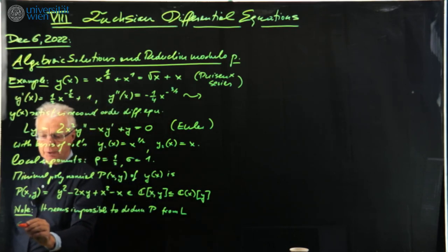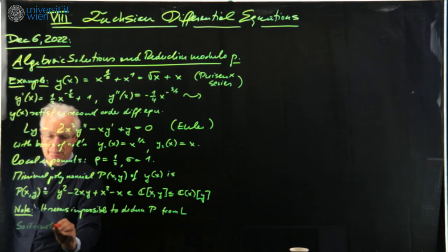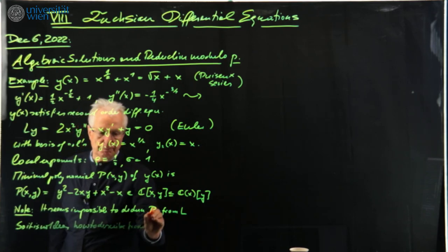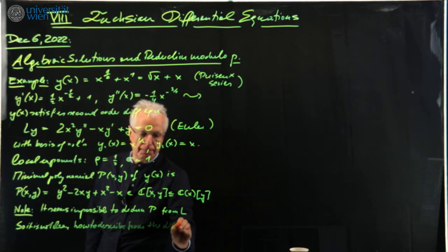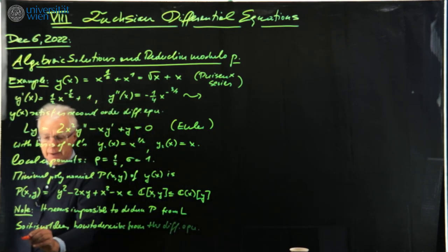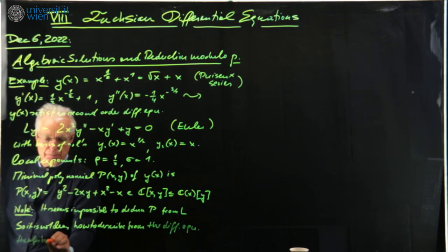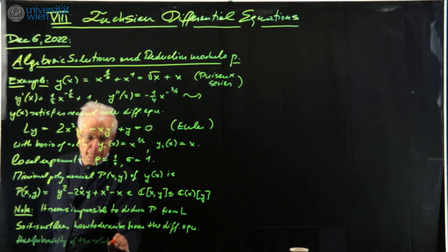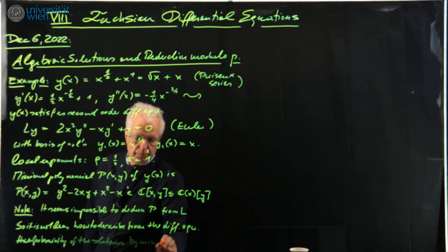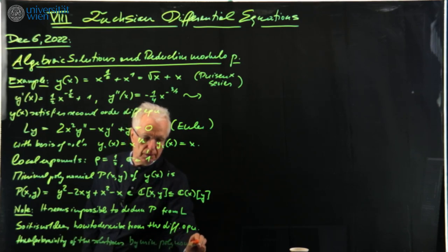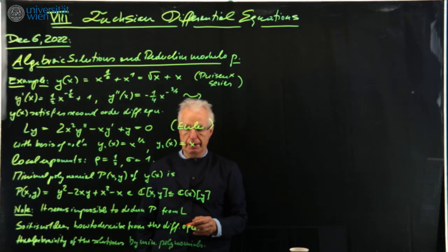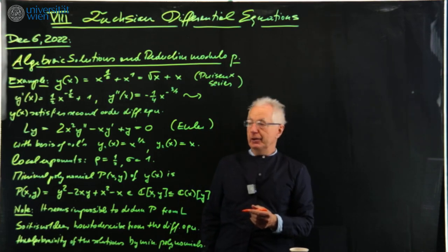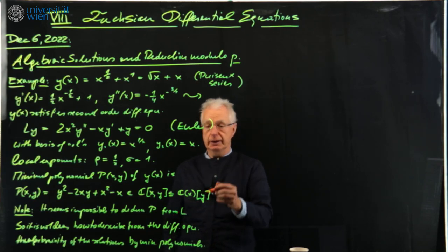It is not clear how to detect just this one linear combination from the basis and to recover the minimal polynomial. So that's one of the problems when you try to go from a differential equation to algebraic solutions: you don't know what to look for. It is not clear how to describe the algebraicity of the solutions by minimal polynomials. One way out could be to look at the Galois group, but even then it is not clear how to recover or construct this Galois group from L.